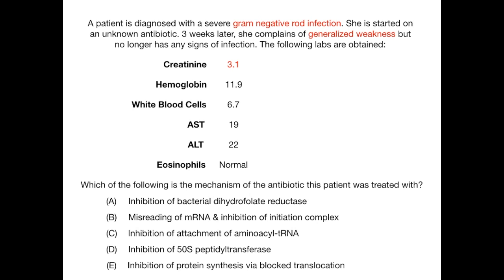The only grossly abnormal lab is the elevated creatinine at 3.1. The eosinophils are normal, the AST and ALT are normal, the white blood cell count is normal, and the hemoglobin is on the low end of normal. No patient age is given, so that borderline hemoglobin is likely insignificant. The key abnormality pointing us to the answer is the elevated creatinine.